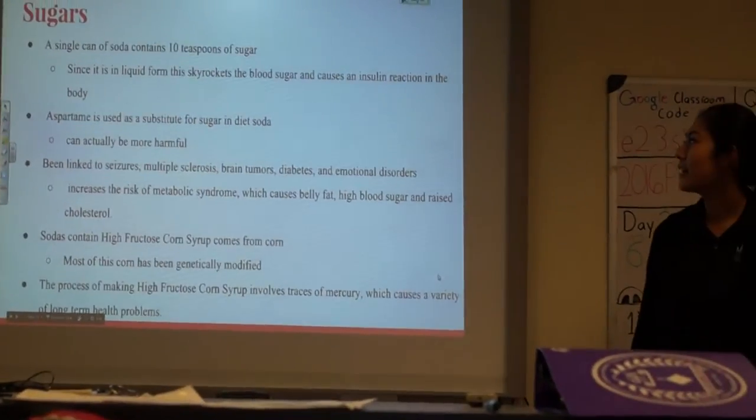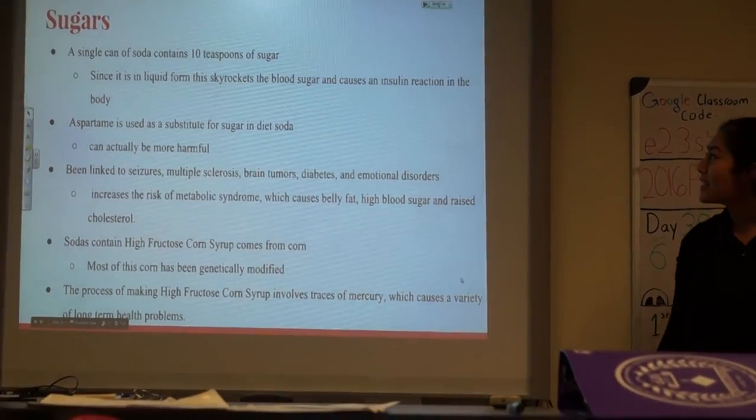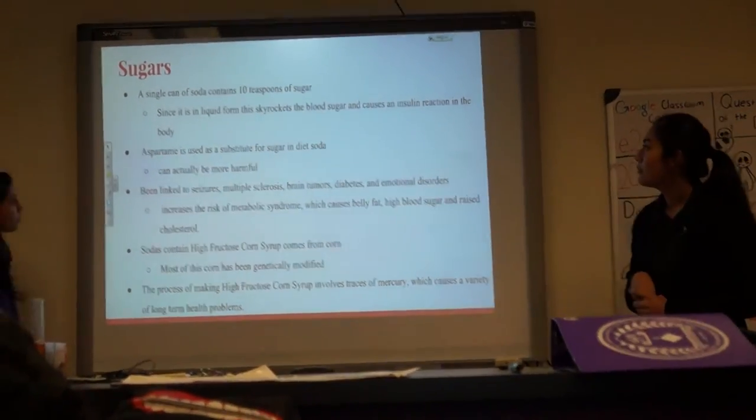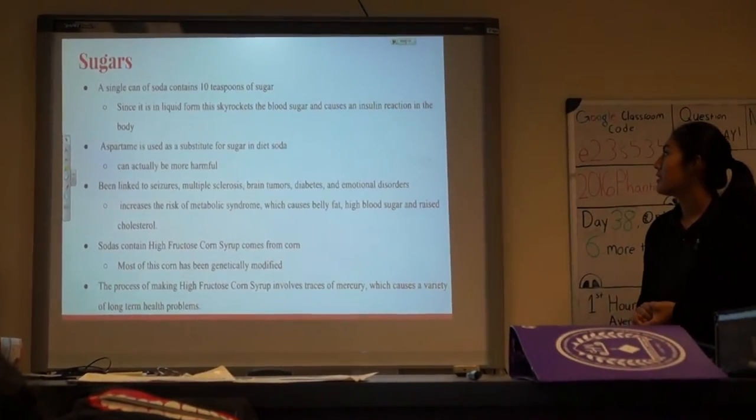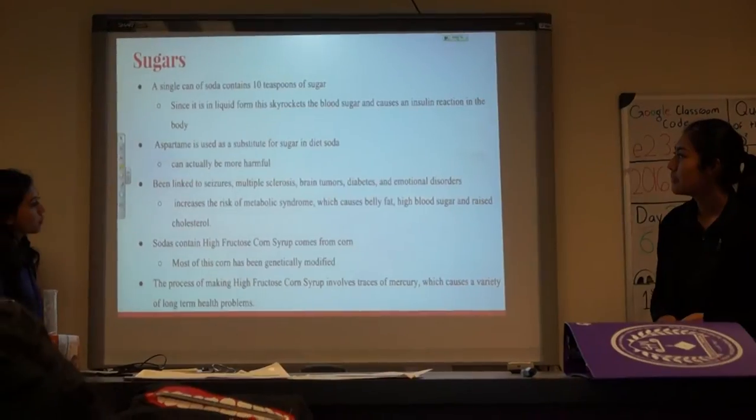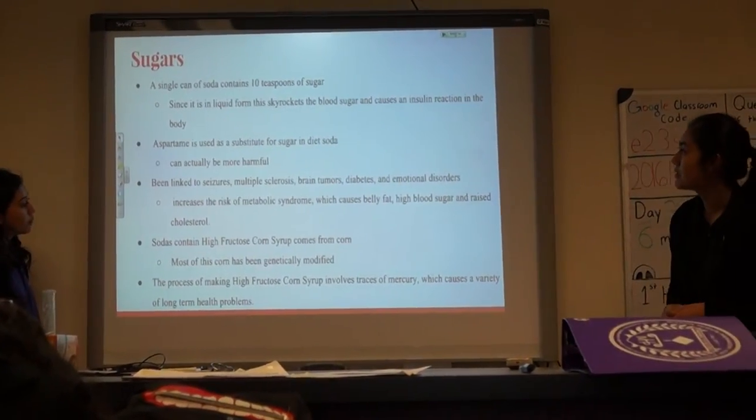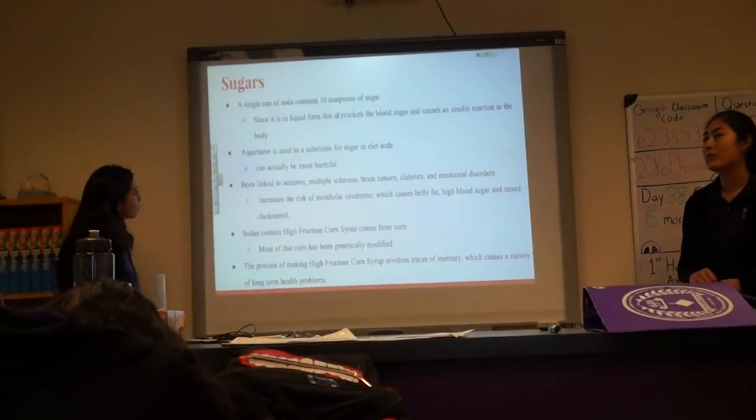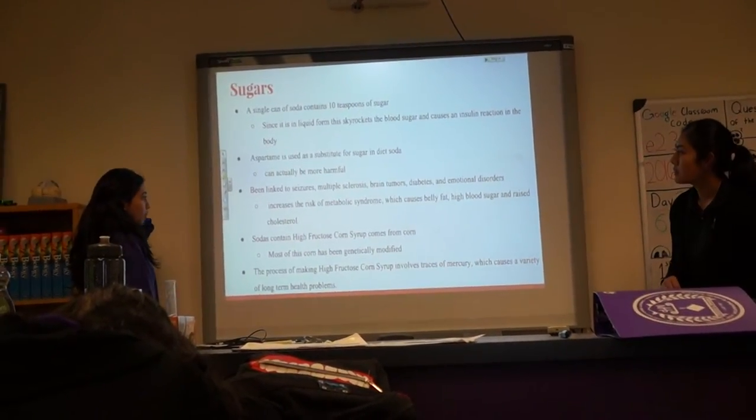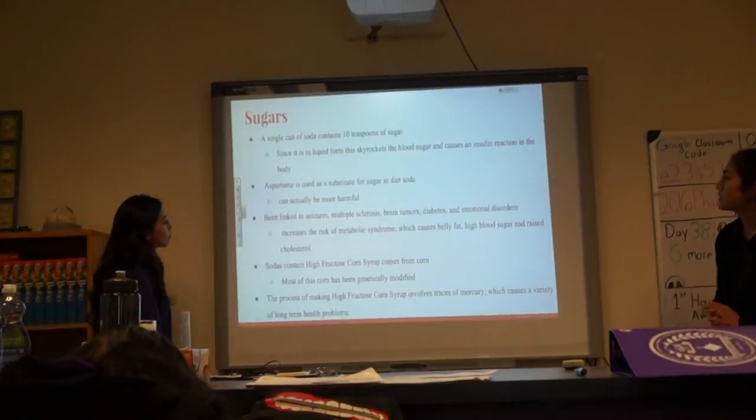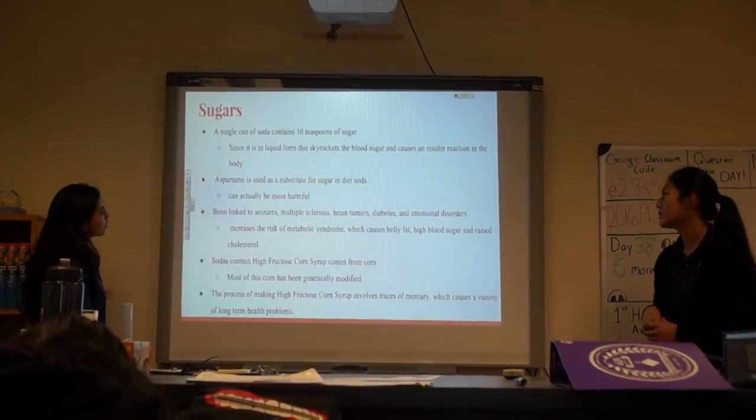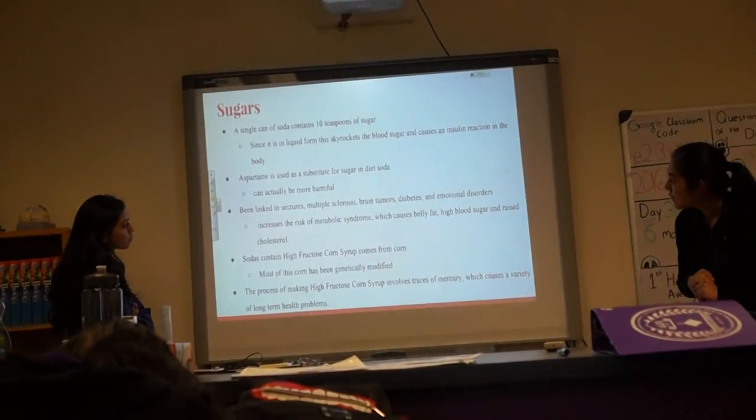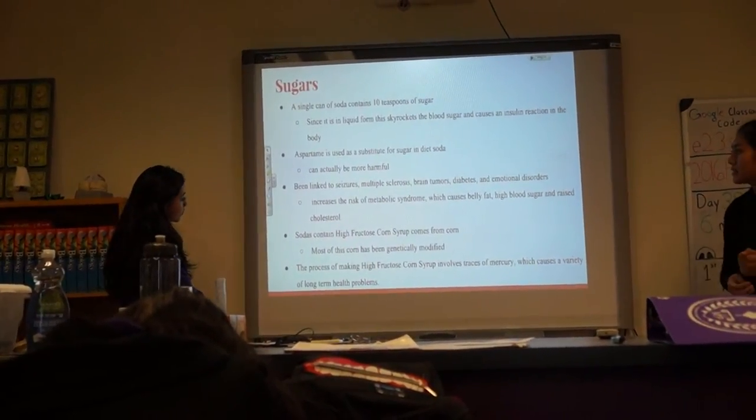Sugar: a single can of soda contains 10 teaspoons of sugar. Because it is in liquid form, this skyrockets the blood sugar and causes an insulin reaction in the body. Aspartame is used as a substitute for sugar in diet soda, and it can actually be more harmful than regular soda. It's been linked to seizures, multiple sclerosis, brain tumors, diabetes, and emotional disorders. It increases the risk of metabolic syndrome, which causes belly fat, high blood pressure, and raised cholesterol.